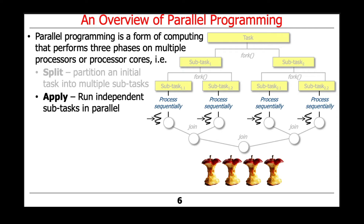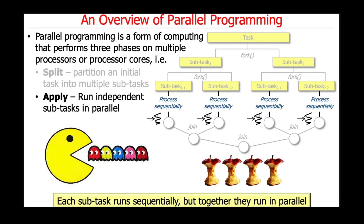Once we've split down into these small atomic units, we take those atomic units and run them in parallel. The splitting and applying can actually take place concurrently as well — you don't have to wait until everything is completely split before you start to process. Keep in mind that each subtask, each of the little things shown here with the squiggly arrows and thread symbols, runs sequentially, but together they all run in parallel. That's how we get parallel processing.